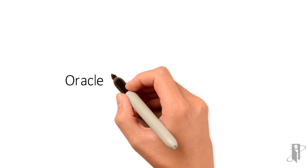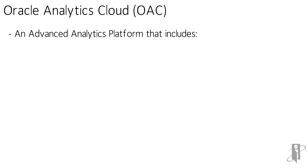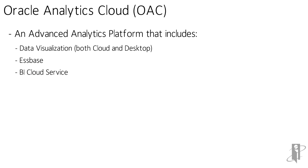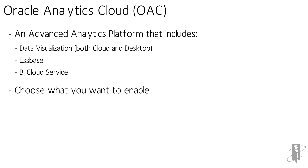So what is Oracle Analytics Cloud, or OAC? It's an advanced analytic platform that includes data visualization both in the cloud and on the desktop, Essbase, and BI Cloud Service. So it's not a single product, but really a platform that includes multiple products to use for your analysis, data visualization, and BI in whatever way you want. You basically choose which of those products you want to enable and how you want to use them.